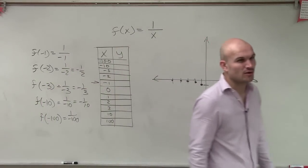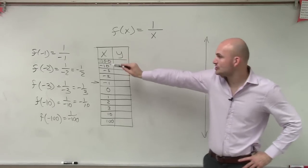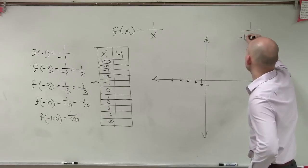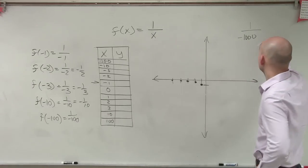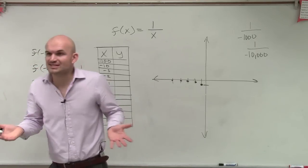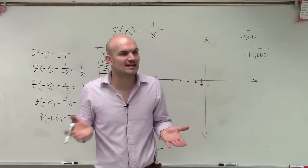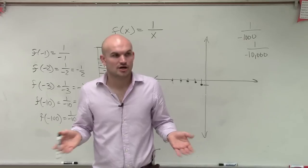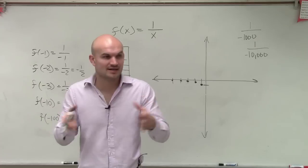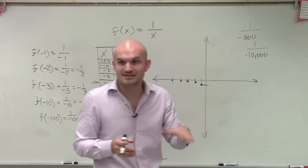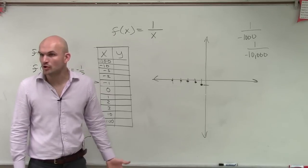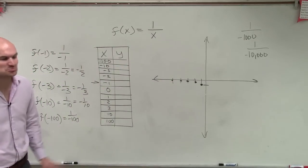It looks like the values are going to keep on getting closer and closer to 0. But if I keep on picking larger and larger numbers, am I ever actually going to get 0? No. If I do 1 over negative 1,000, does that give us 0? No. What about 1 over 10,000? It's going to keep on getting closer and closer to 0, but never reach it. It's like taking a string and cutting it in half — you're never ever going to exactly eliminate it. We're going to get very, very close to 0, but we're never actually going to approach it.